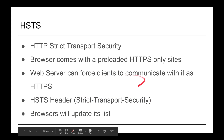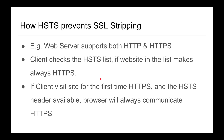So how does HSTS prevent SSL stripping? Your web server can support both HTTP and HTTPS and redirect on the back end — that's fine. But we don't want the client to even make that HTTP request in the first place. So when a client navigates to google.com, before sending the request, the browser checks its HSTS list to decide whether to use HTTP or HTTPS.